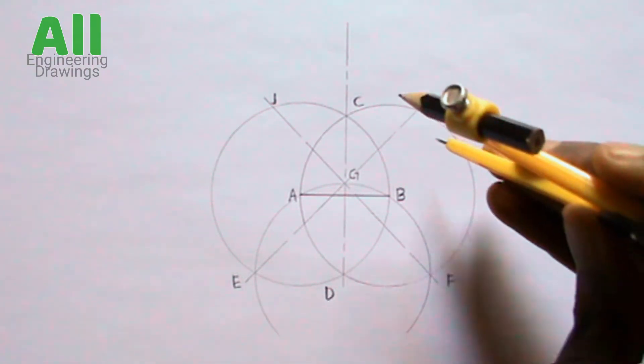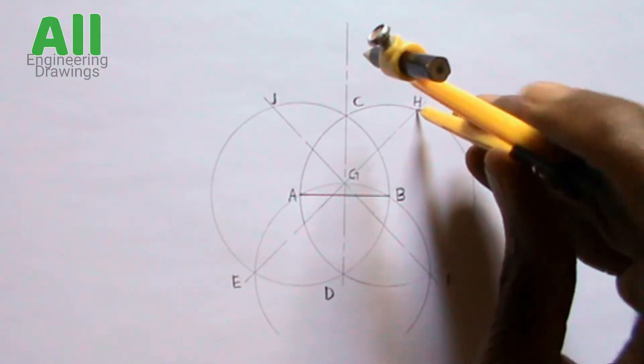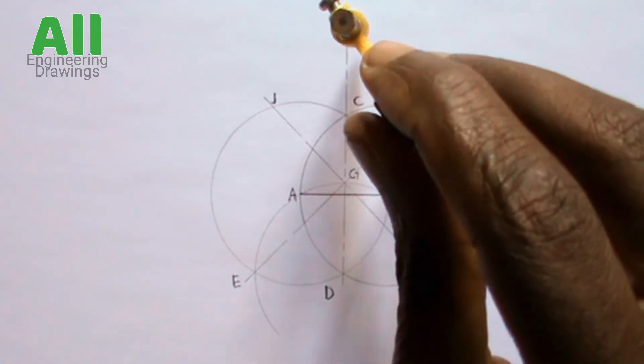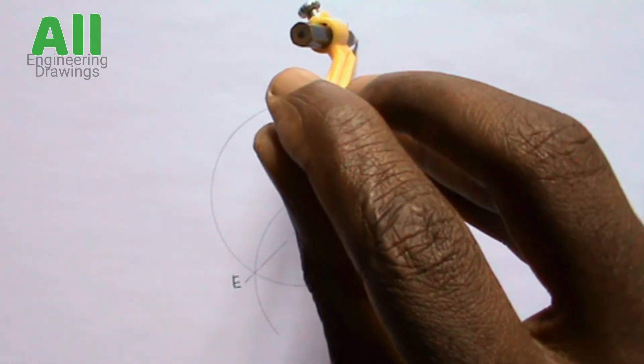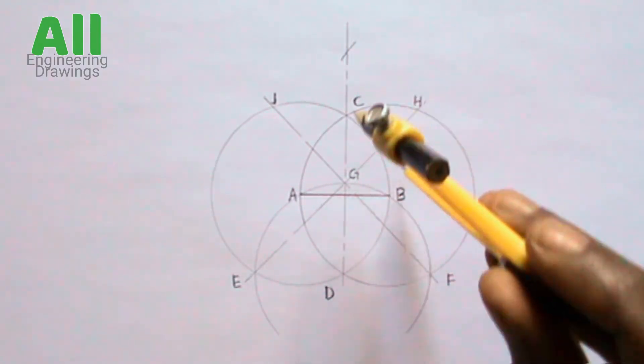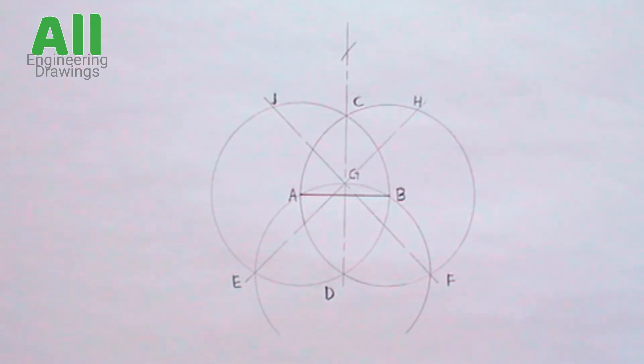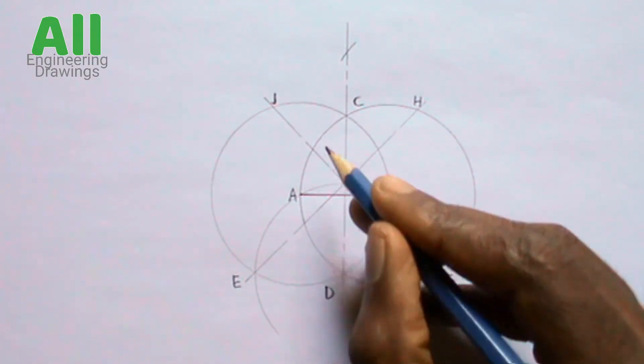Then cut an arc on the vertical line this way. Label the points where the arc intersects the vertical line.